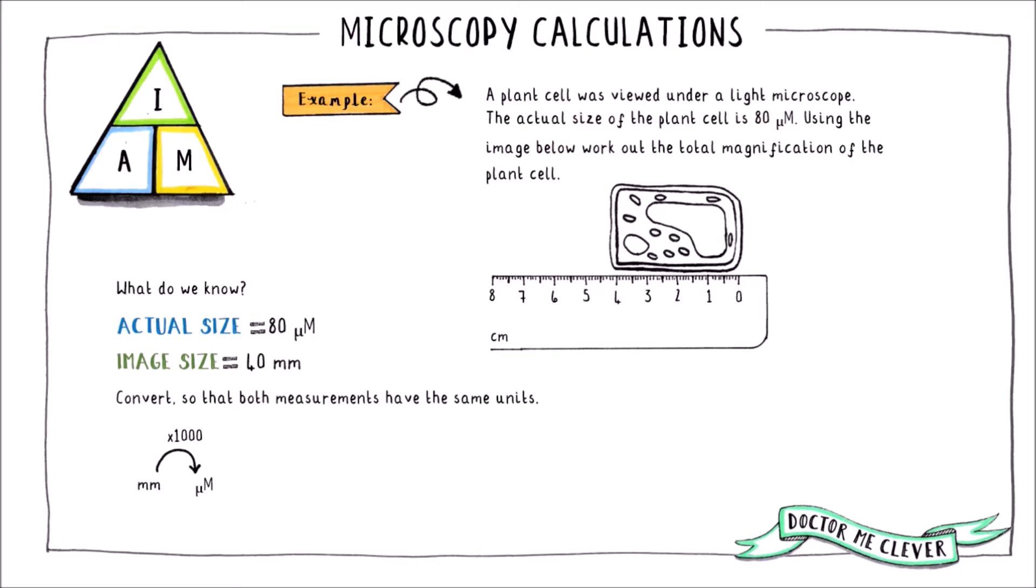I like to work in micrometers here so let's change the image size into micrometers. To do this we times by 1000 because there are 1000 micrometers in 1 millimeter. This gives us 40,000 micrometers.